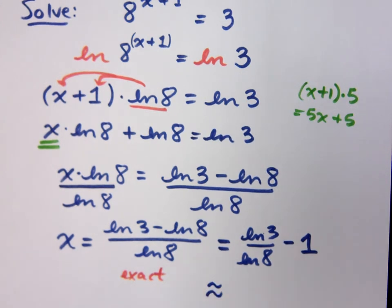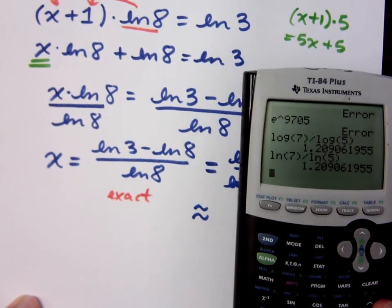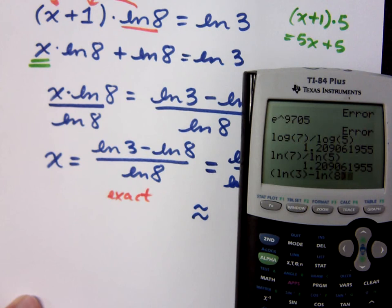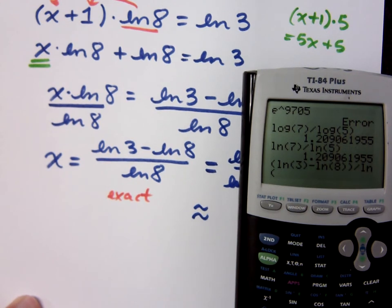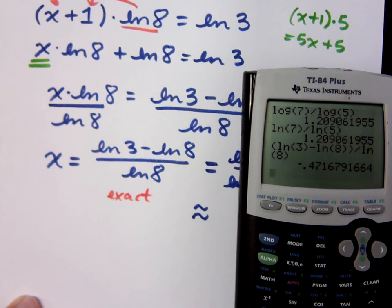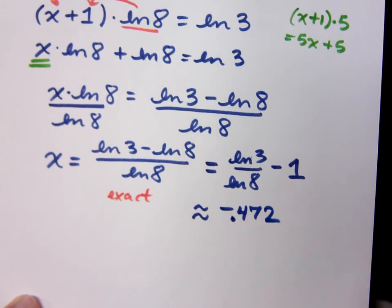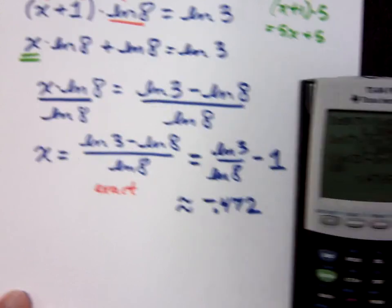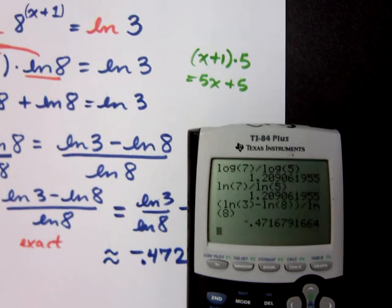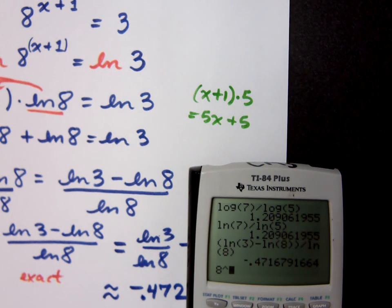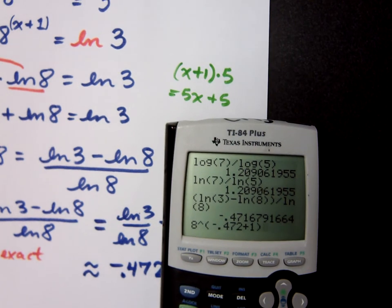What is my decimal approximation? Negative 0.472. Let's see. We've got the natural log of 3 minus the natural log of 8 divided by the natural log of 8. So negative 0.472. Now let's go back and check this just to make sure that it does match up with what we have. So we're saying that 8 to the x plus 1 power equals 3. So if I do 8 raised to the negative 0.472 plus 1, that should give me something that's about 3. Now, I'm just using the approximation that I have here so you see that my answer will be approximately equal to 3.